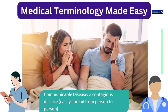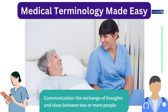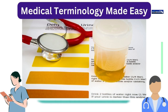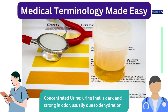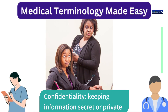Communicable disease: a contagious disease, easily spread from person to person. Communication: the exchange of thoughts and ideas between two or more people. Concentrated urine: urine that is dark and strong in odor, usually due to dehydration. Confidentiality: keeping information secret or private.